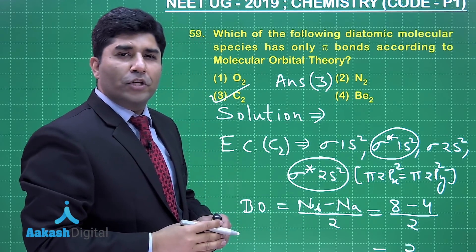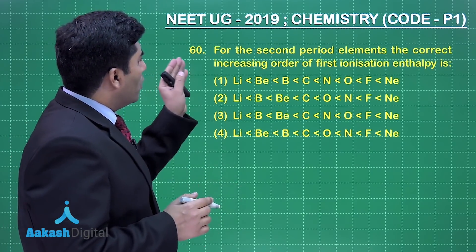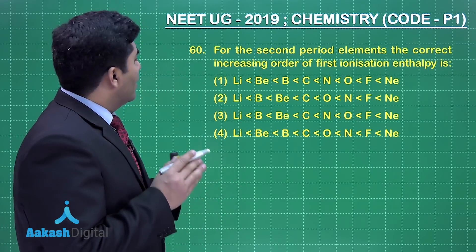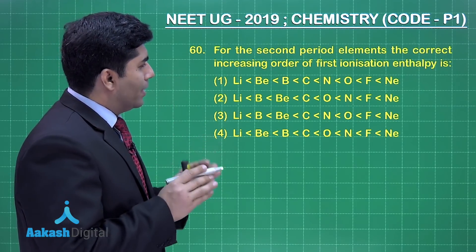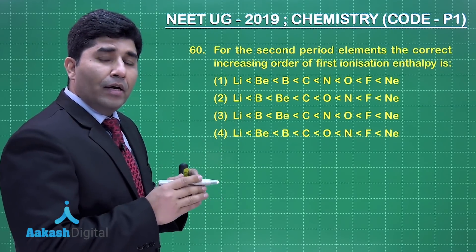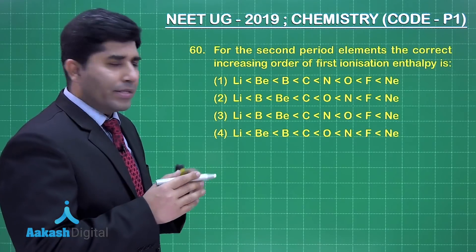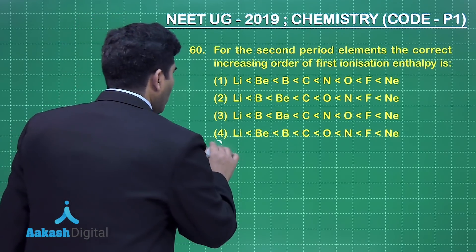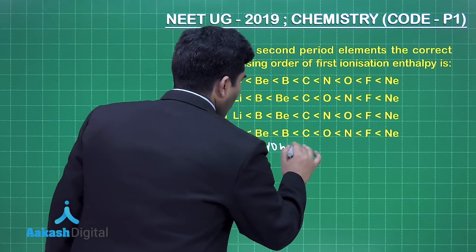Let's move on to the next question. This question asks for the correct increasing order of first ionization enthalpy for second period elements. We know that as we move across the period, ionization energy increases, but there are two exceptions.